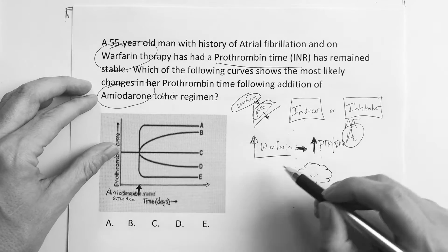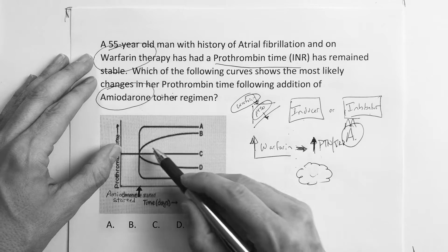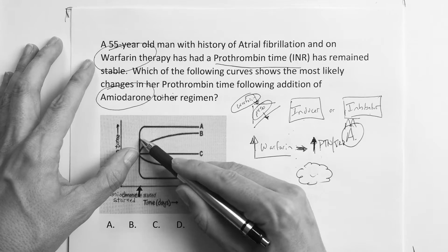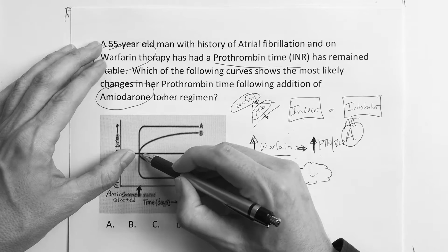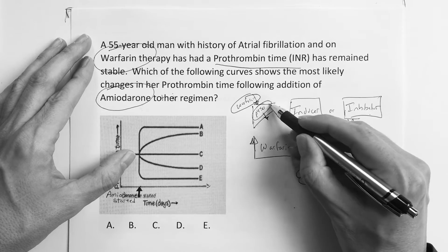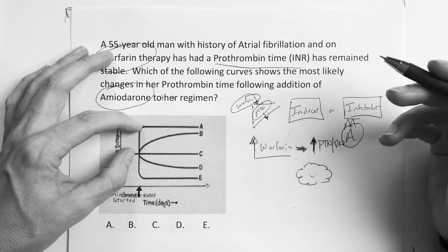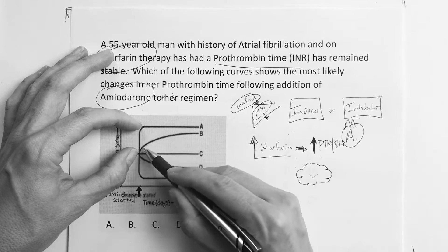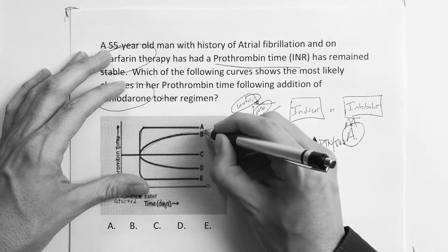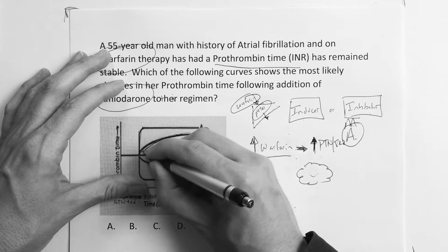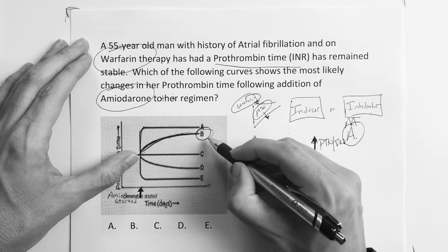Because there's more warfarin around, it's going to make the blood thinner — and remember, the higher the PT number, the thinner the blood. From this, we interpret: PT was steady and then it goes up. So we're left between answer A or B. Do you think it happened instantaneously or was it a gradual logarithmic increase? The correct answer is not an instant jump — it's a gradual increase, so B is the better choice. You had to know how to interpret the graph, and warfarin could be replaced with any inducer or inhibitor drug.